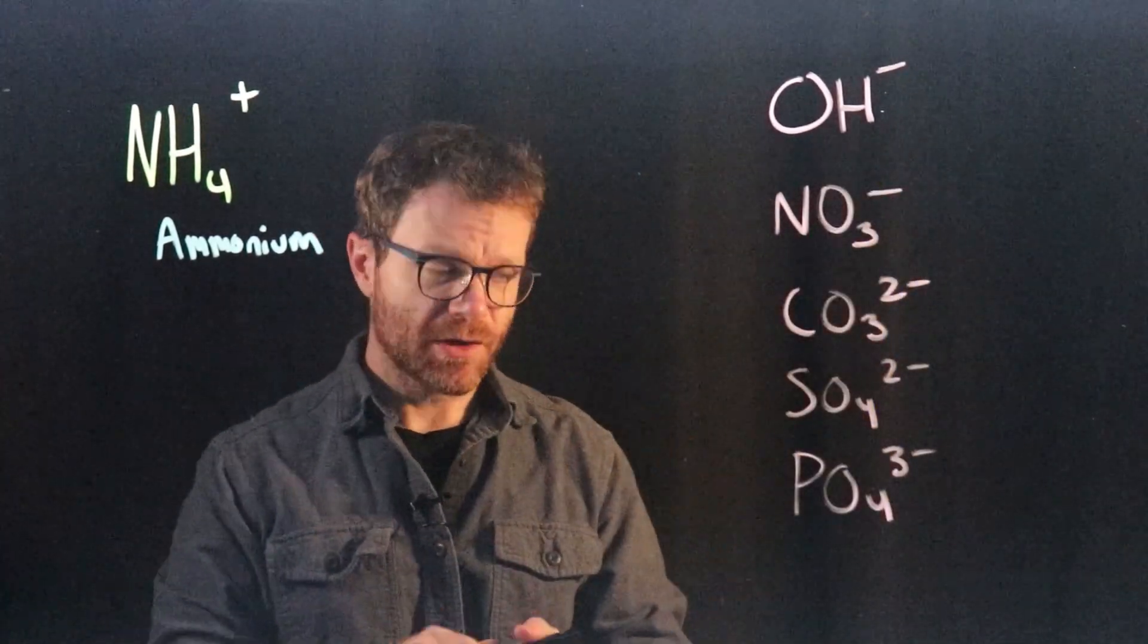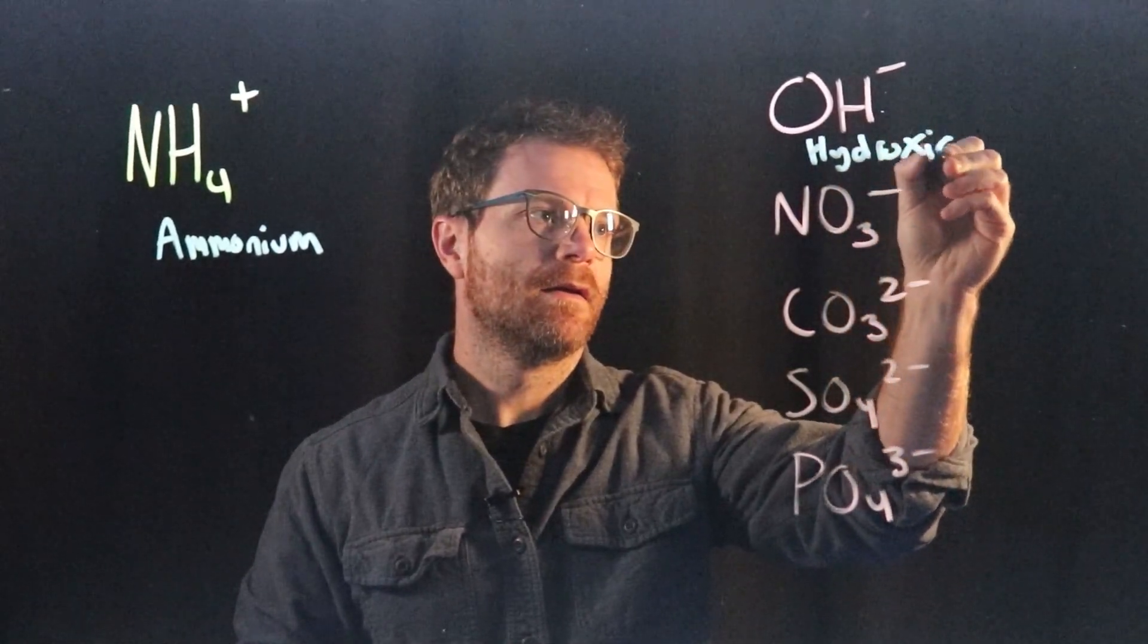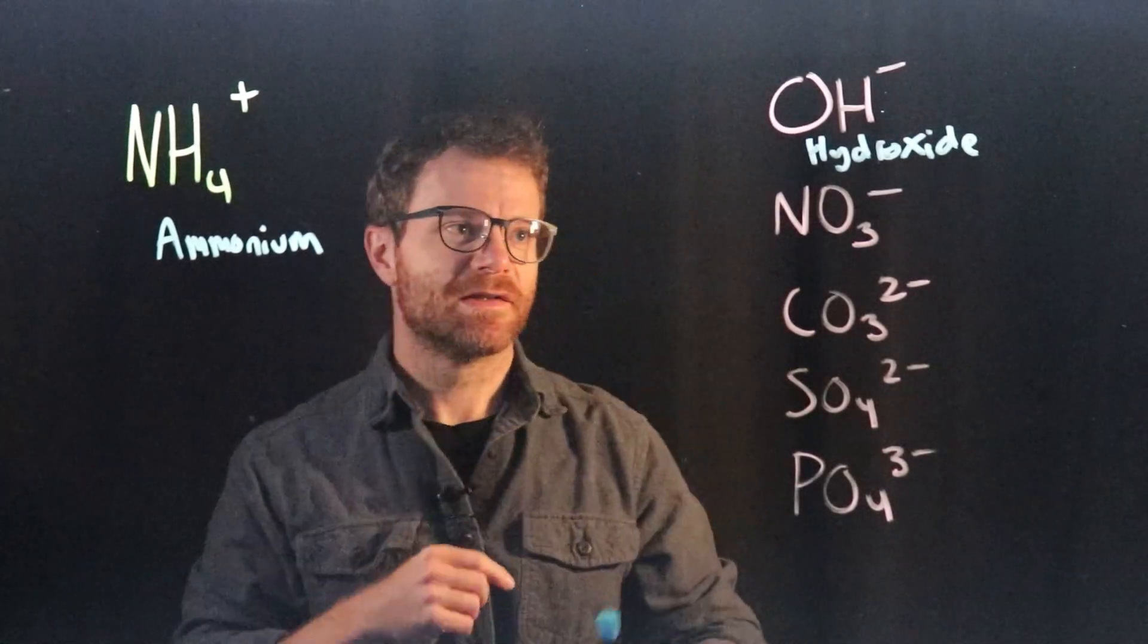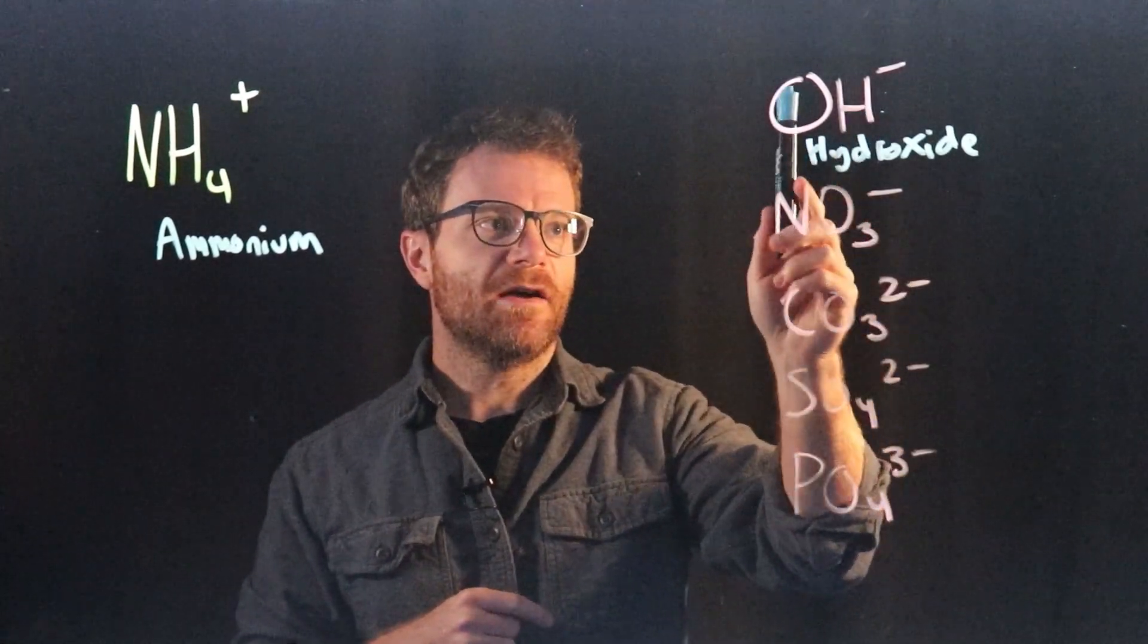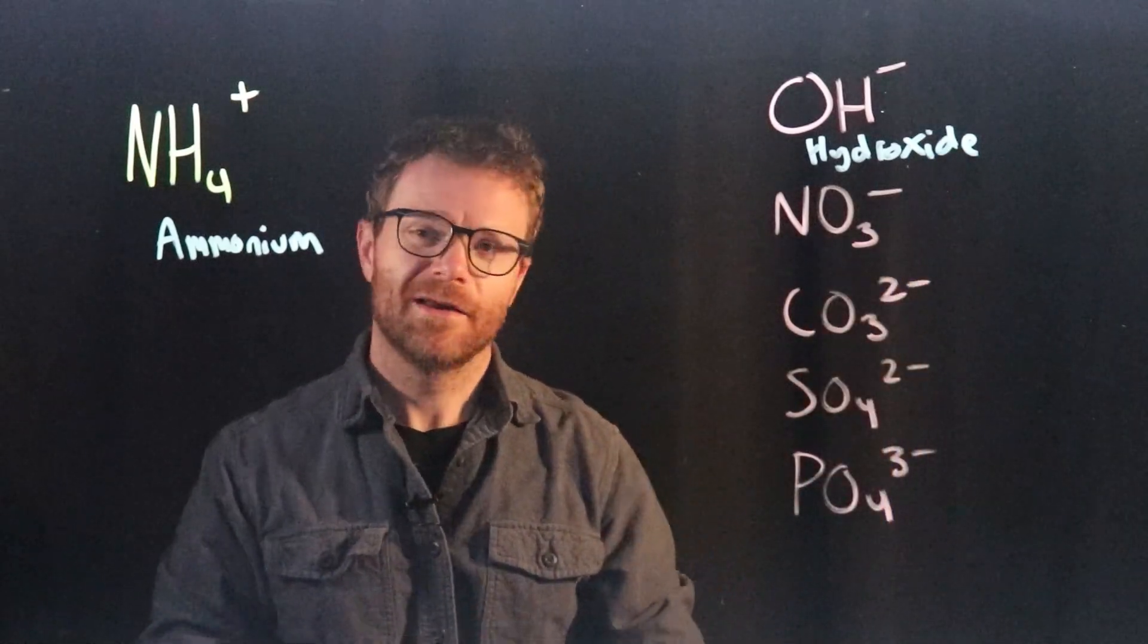OH with a minus one charge. We've already seen that one. That's called hydroxide. And hydroxide is actually really easy to remember because it's just a hydrogen and an oxygen. Hydro, ox, and then an ide ending. Hydroxide.